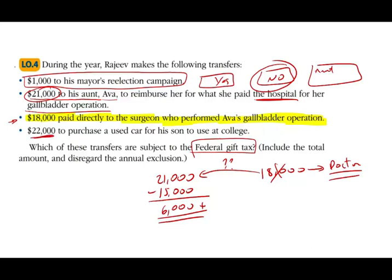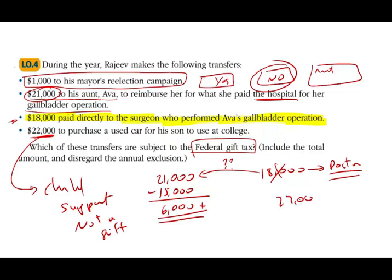$22,000 to purchase a used car for his son to use at college. We don't have enough information, so we'll make two assumptions. Generally speaking, that's a gift and it exceeds $15,000. Or, if this is part of a child support obligation under state law, then it's not a gift. If we're not told anything, and it's generally just $22,000, then yes, that's a gift. Of the $22,000 — assuming that's the only gift he gave his son this year — he can exclude $15,000, and what's left is $7,000. Remember, this $15,000 could change every year due to inflation or Congress readjustment.